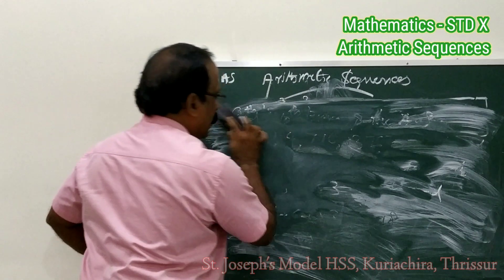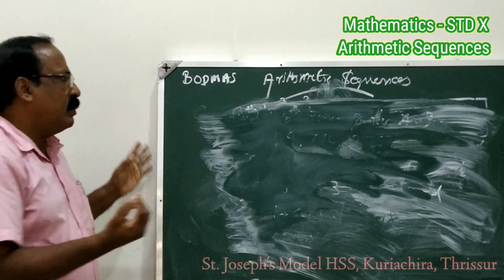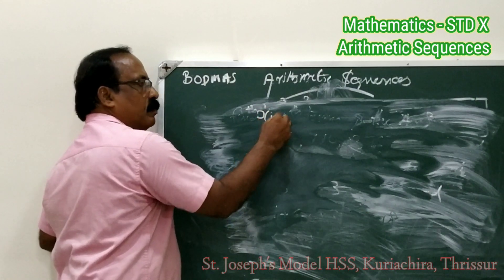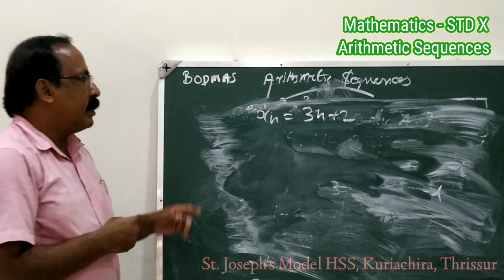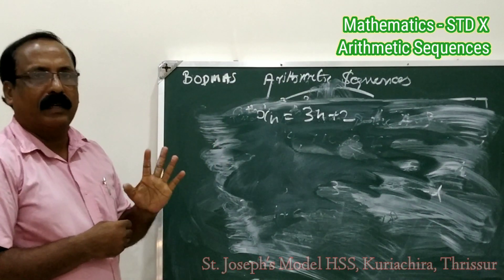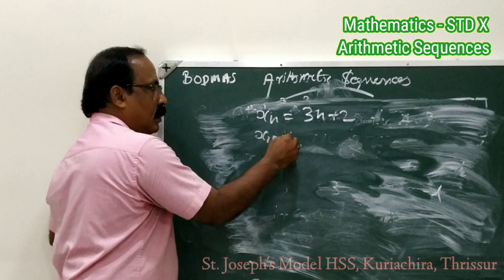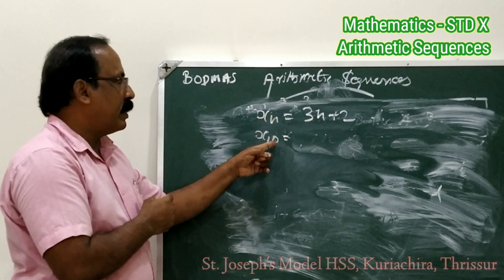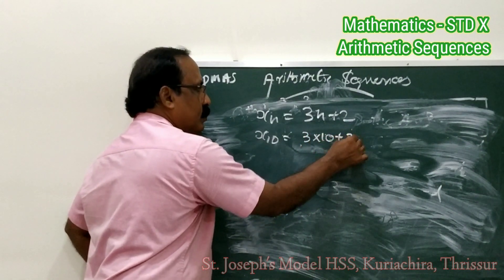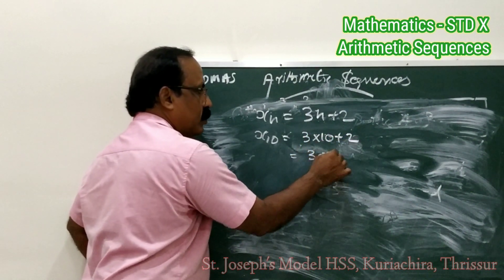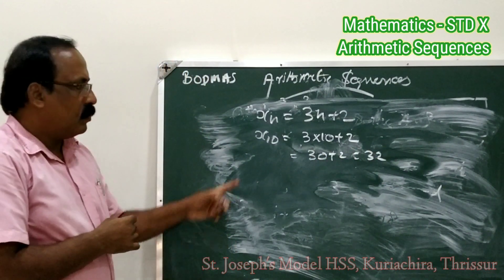One more example: suppose the algebraic form of an arithmetic sequence is given as xn equals 3n plus 2. What will be the 10th term? Putting n equals 10: 3 times 10 plus 2, which equals 30 plus 2, equals 32. So the 10th term is 32.